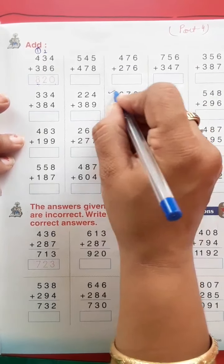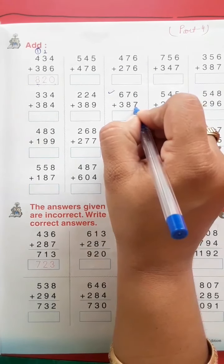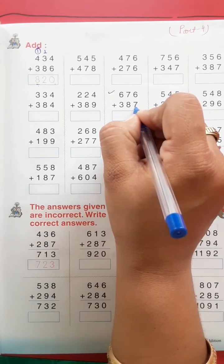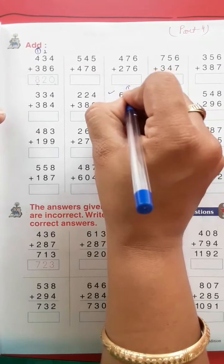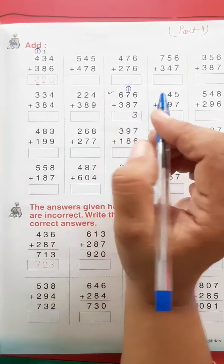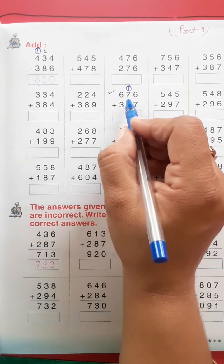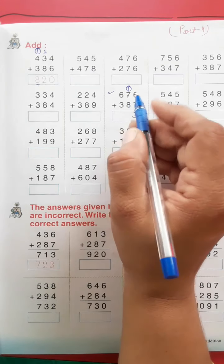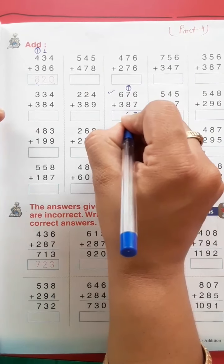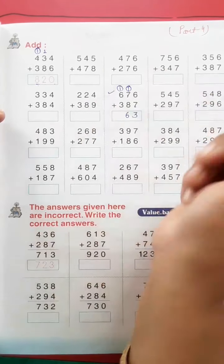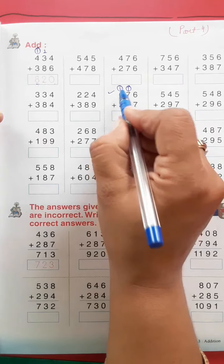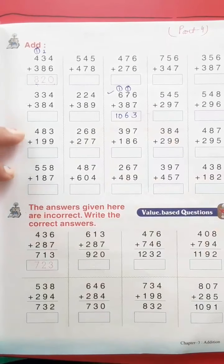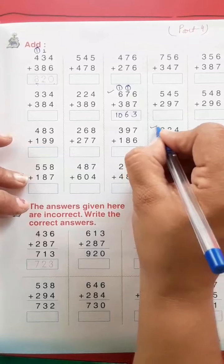Let's see some more. This one: six and seven is 13, 3 carry 1. Seven and eight is 15, plus 1 is 16, 6 carry 1. Six and three is nine, plus 1 is ten.